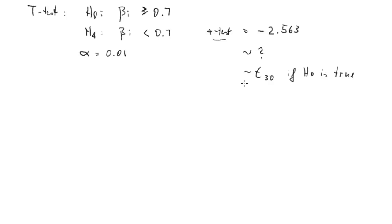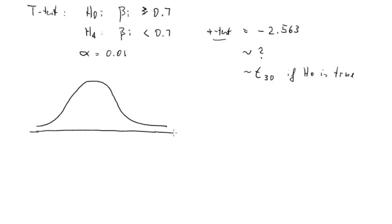Let's draw a picture. Here is our stylized t-distribution, centered around zero. Our calculated test statistic is at negative 2.563. Graphically, the p-value in this case is the area to the left of negative 2.563. The area underneath the entire distribution is 1, and we look to the left because our alternative is that beta_i is smaller than 0.7 — it's a left-tail test.